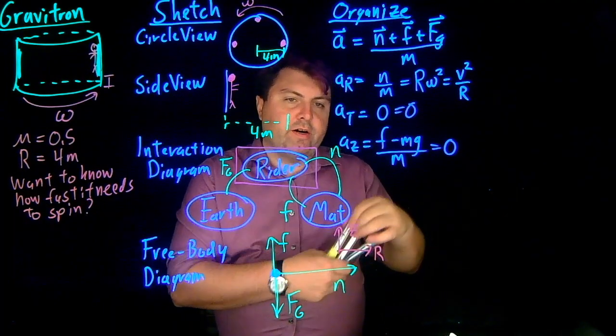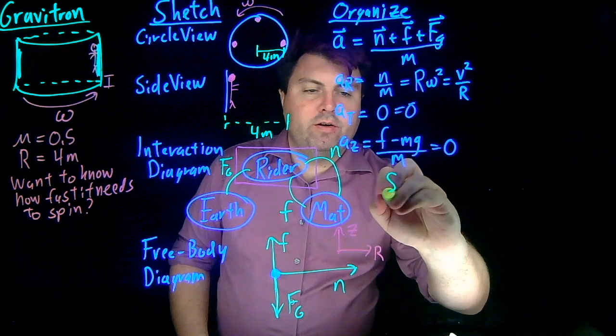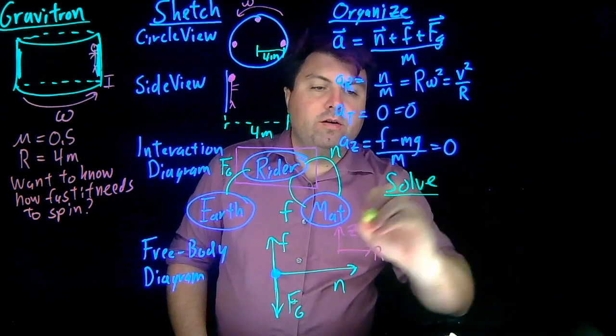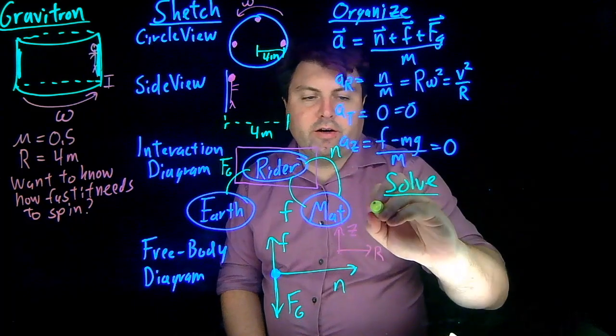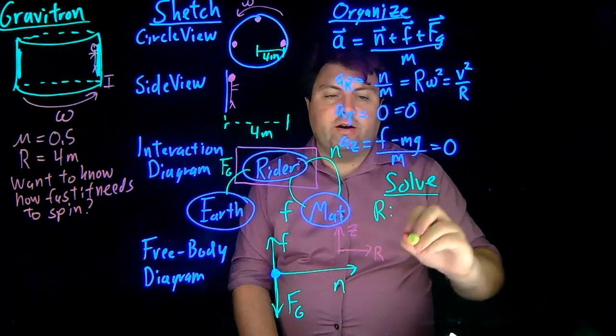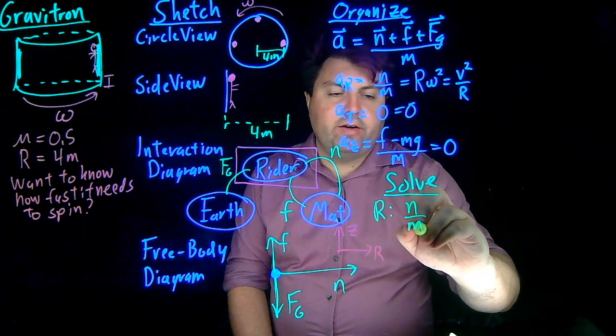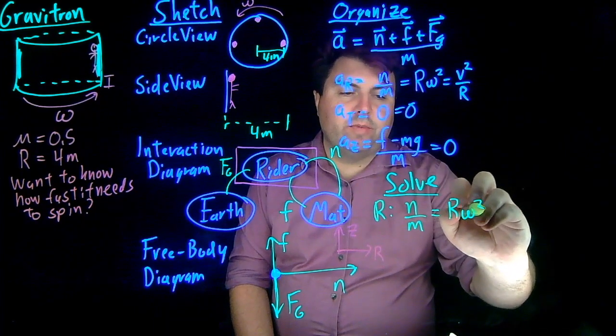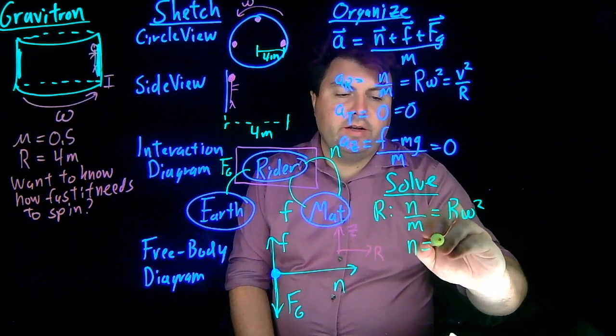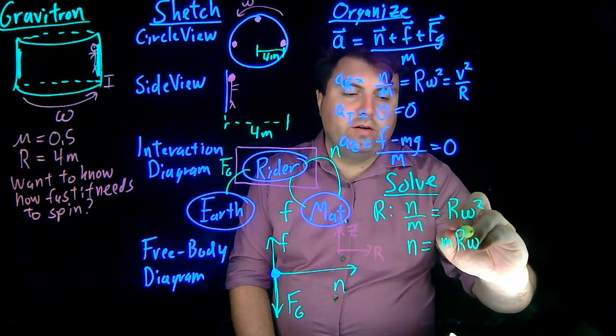So in our solve step, we can take a look at our R direction. In our R direction, we got N over M equals R omega squared. So we can say that our N is equal to MR omega squared.